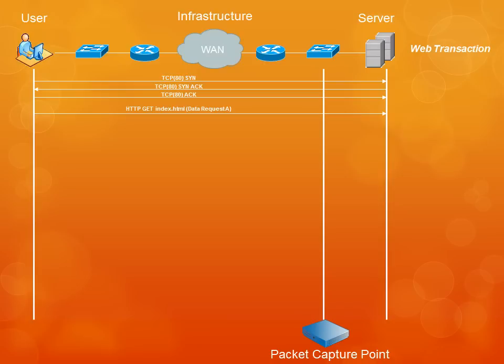The server may even make a back-end service call to an application server or database server. After gathering the data to fulfill the request, the server will begin sending the data back out to the user. Since the data isn't normally extremely small, the server will normally split the data into multiple packets to send them out to the user.